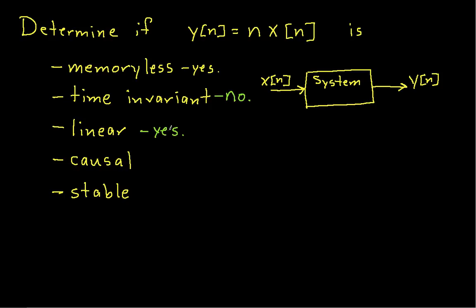Causal. A causal system is one where the output at a given time n does not depend on future inputs — it depends only on inputs from time n or earlier. Since this system is memoryless, the output depends only on the input at time n, which means it is also causal.